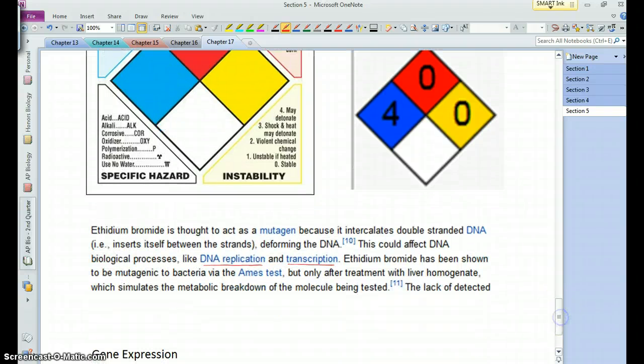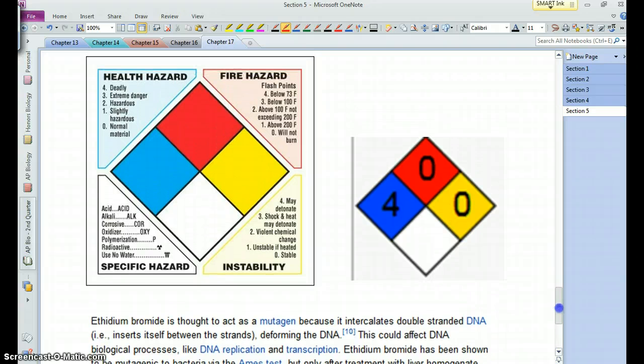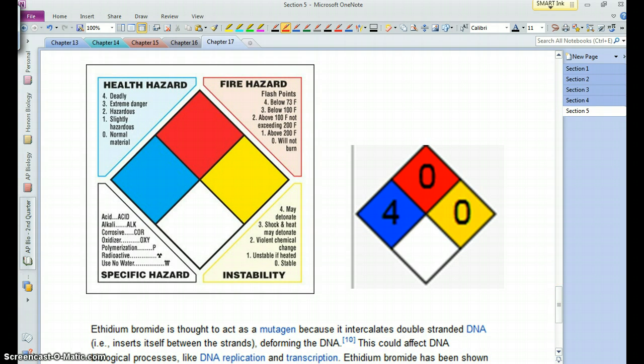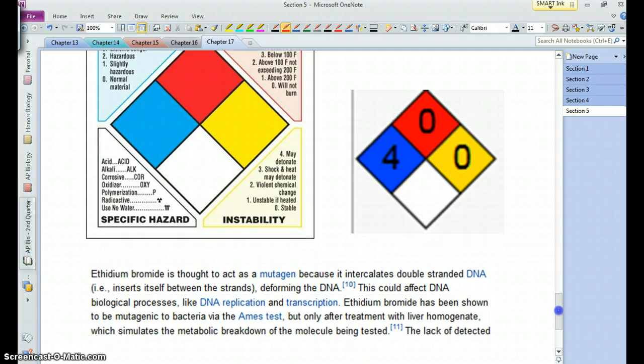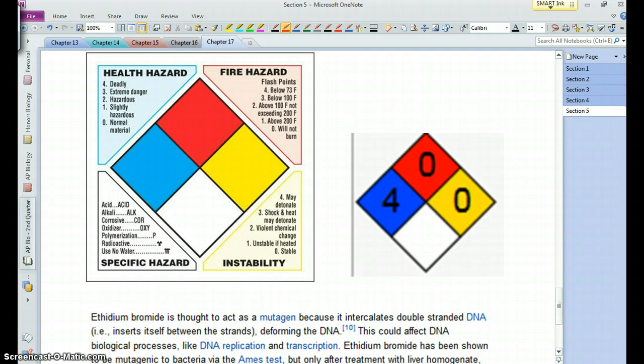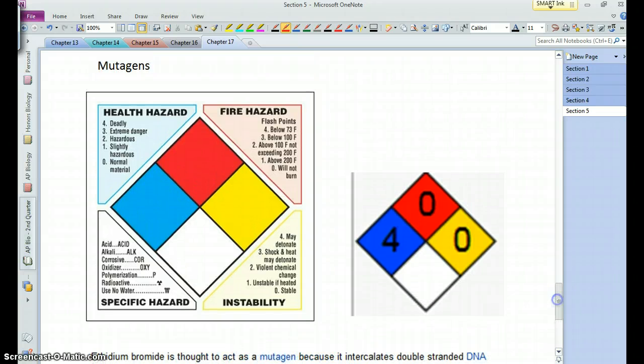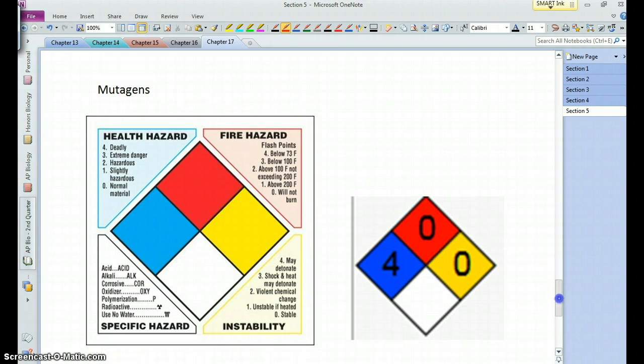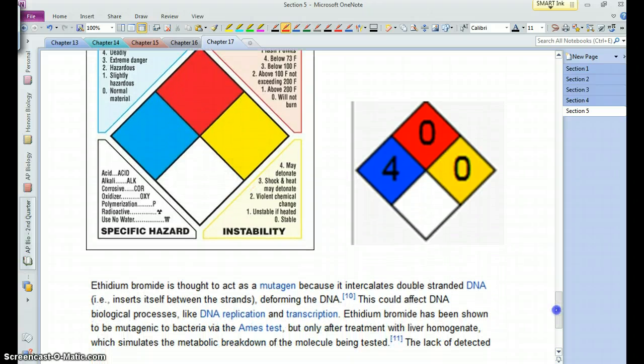Labs that use this stuff, you have to be very careful with it and dispose of it properly, because you don't want to expose yourself to it. There are lots of things, certain compounds in cigarette smoke that are mutagenic. They can cause changes to the DNA and cells inside your lungs, which can lead to cancer. UV light is considered a mutagen as well, because it can damage the DNA in your skin cells.